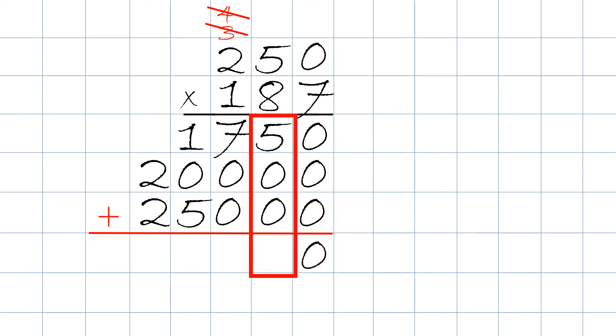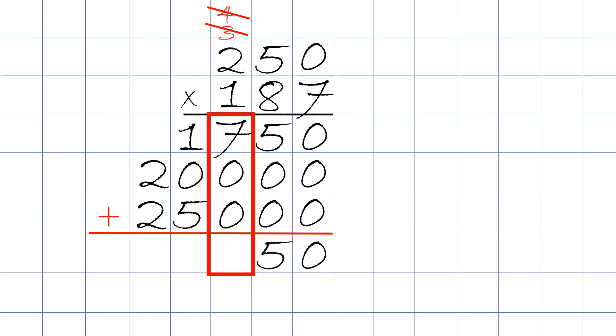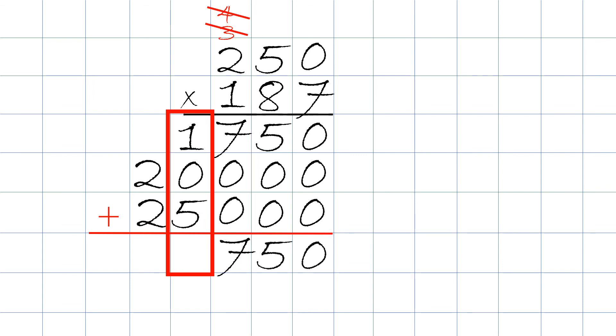Seven plus zero plus zero plus zero equals seven. One plus zero plus five equals six, and two plus two equals four.